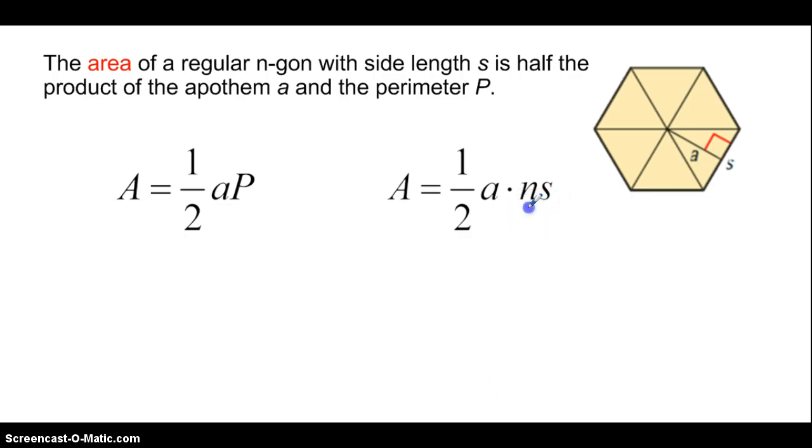And then times n times s, which n always represents the number of polygon sides, and s is the length of each side as we can see in the picture. But we also know that this n times s is the same thing as the perimeter of the actual polygon. So that's where this other formula comes from.